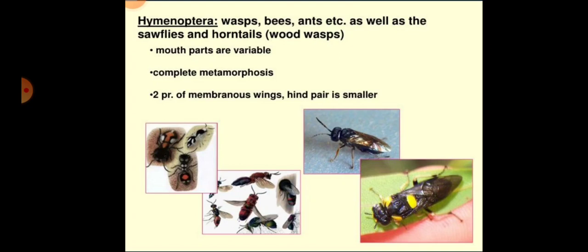Mandibles are prehensile or feeding dentate organs in sawflies. Labial palps are four-segmented; glossa is modified into a proboscis with a spoon-like lobe called the flabellum; paraglossae vestigial or absent. Galea in sawflies is modified into large lobes.